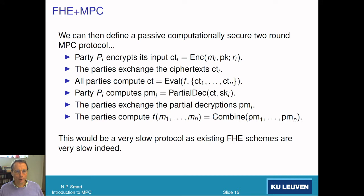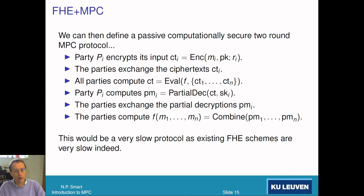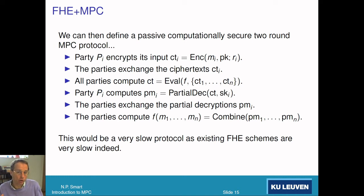So how do we design an MPC protocol? This is our first MPC protocol and it's basically six lines. The first thing the parties do is each party encrypts its input using the homomorphic encryption scheme with respect to a public key defined so that distributed decryption is possible. The parties then exchange their ciphertexts. Then each party individually applies the eval operation on the function to be computed, resulting in a ciphertext which encrypts the result of the function we're trying to compute.